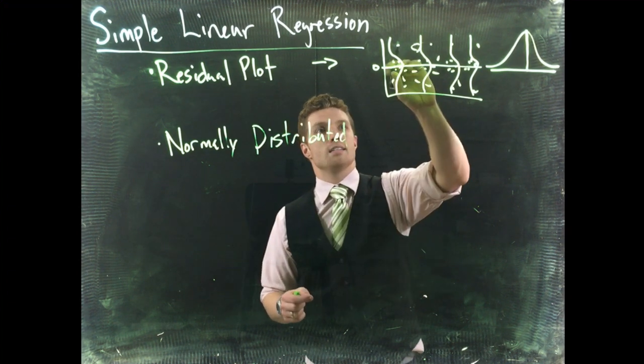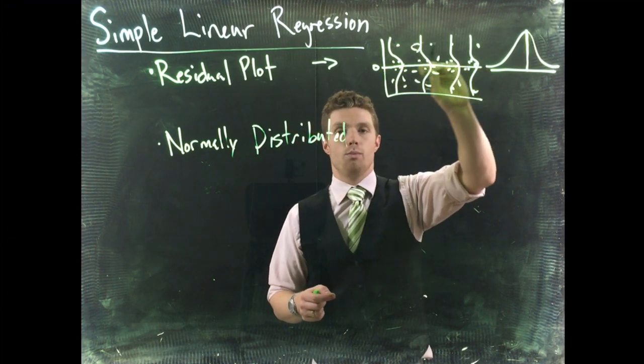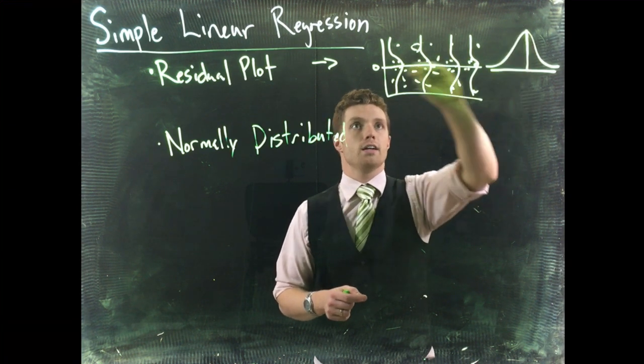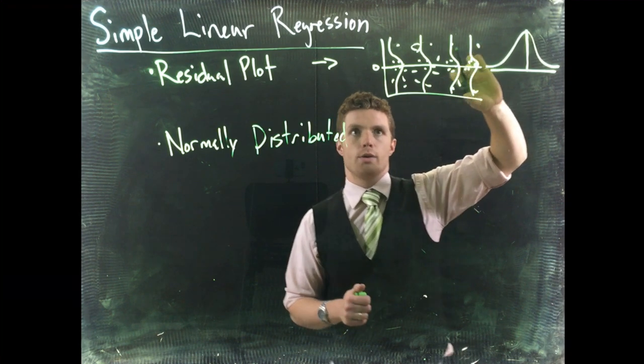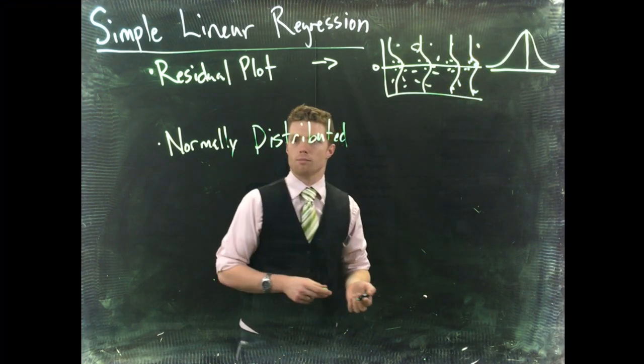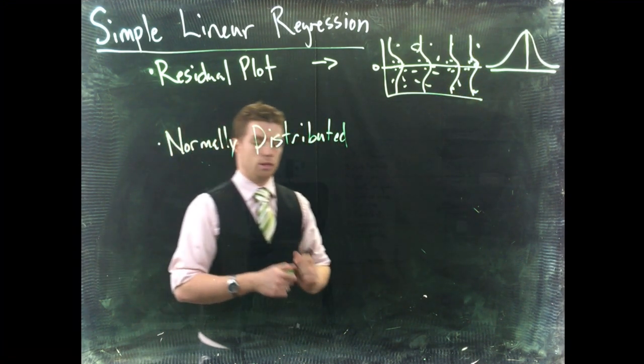So data is clustered about the zero line, just like it's clustered about the center here. And then the data or the residuals occur less and less frequently further and further away from the line. That's what it means when it's normally distributed.